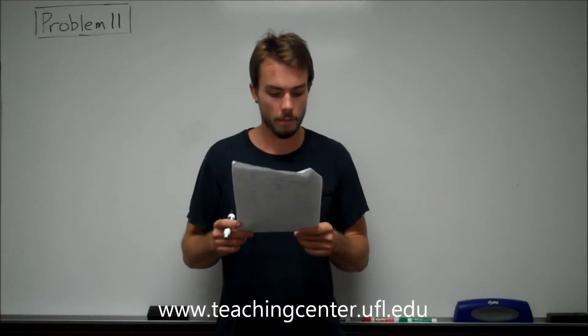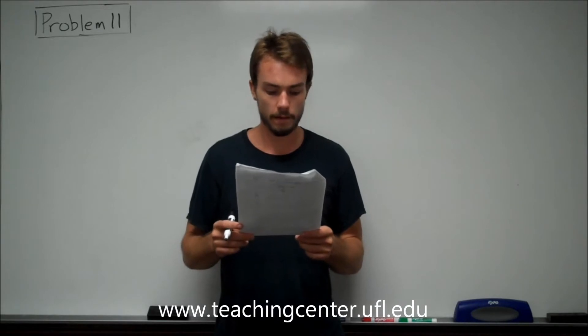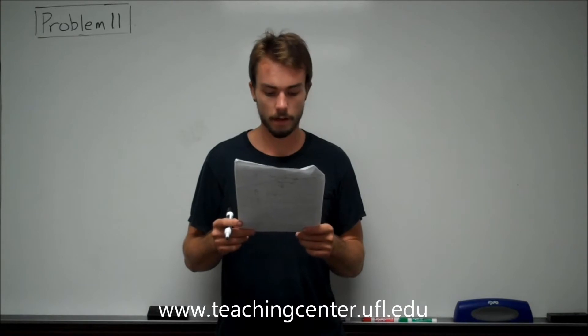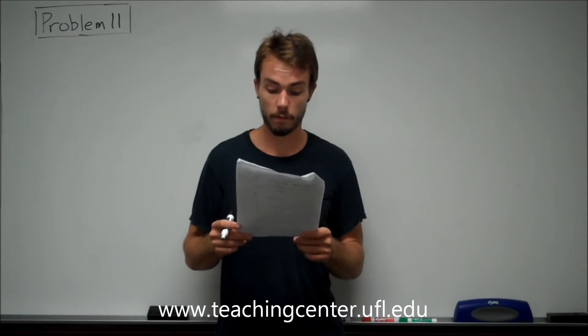Problem 11 states: a simple pendulum consists of a mass hanging on a massless string of length 2 meters. You move the mass so that the string is at an angle of 37 degrees to the vertical and release.